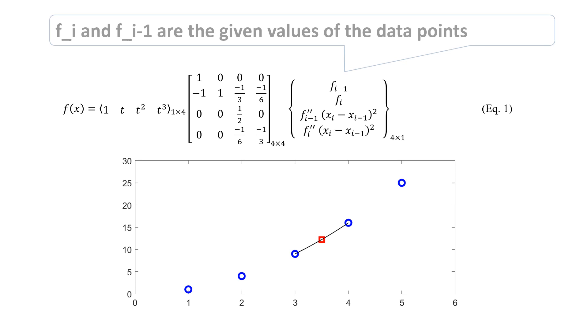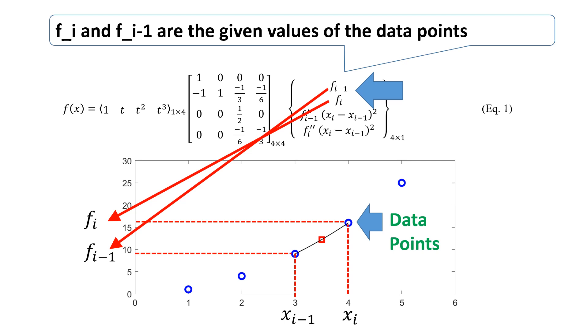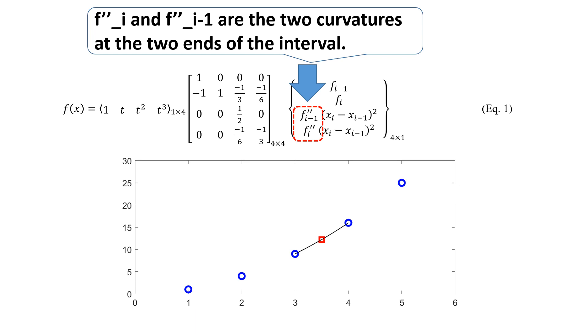Fi and Fi-1 are the given values of the data points. Fi'' and Fi-1'' are the two curvatures at the two ends of the interval.